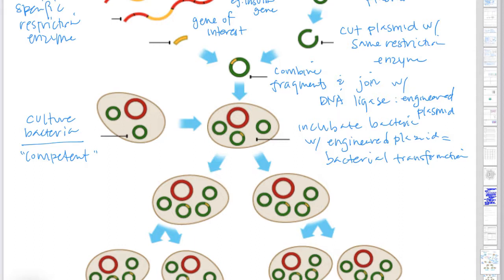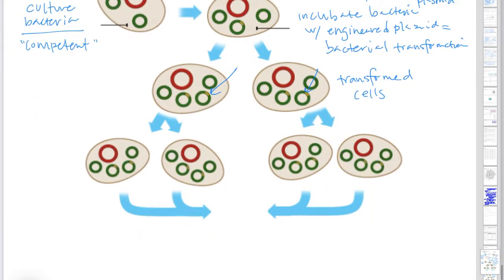Then some of the cells will take in the gene of interest and you can see here and here, we've got the gene of interest. The plasmid is inside those cells. We call those transformed cells. Now the transformed cells are grown on a particular medium. These are grown on selective media so that only the transformed cells grow. Only transformed cells grow. As long as there's a reporter gene on the plasmid, which there typically is.